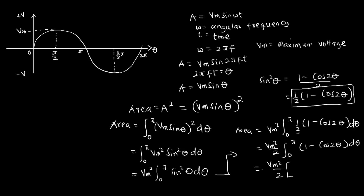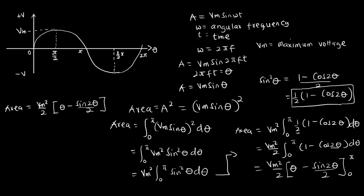Taking the integral, I have Vm²/2 · [θ − sin2θ/2] evaluated from 0 to π. The integral of 1 gives θ, minus the integral of cos2θ which gives sin2θ divided by 2 (dividing by the derivative of 2θ, which is 2). So that's from 0 to π.